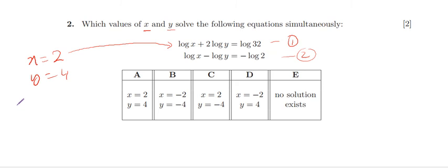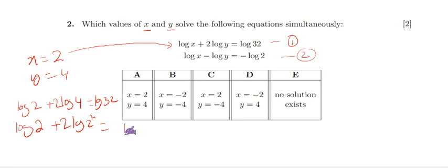So plugging in: log 2 plus 2 times log 4 equals log 32. We can break down this 4, then write log 2 plus 2 log of 2 times 2, and similarly break down 32. This becomes log of 2 to the power 5.